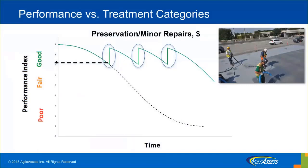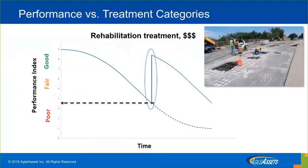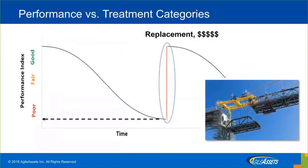Preservation or minor repairs — which are low cost and more frequent actions — happen when the bridge is still in good condition or falling from good to fair. Rehabilitation treatment applies when the bridge is in fair condition and falling to poor — it is more expensive than preservation or minor repair. The last one is replacement, when it's too late to fix the bridge and we have to spend a lot of money to replace the whole bridge because it is already in poor condition.